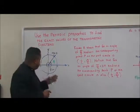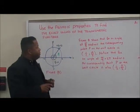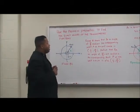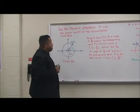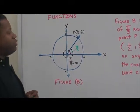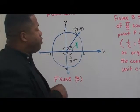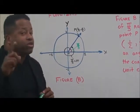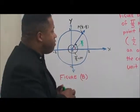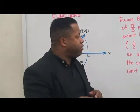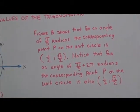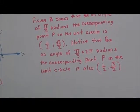Let's move over here to figure B. Figure B shows that for an angle of pi over 3 radians, the corresponding point P on the unit circle is (1/2, square root of 3 over 2).